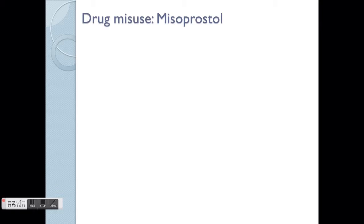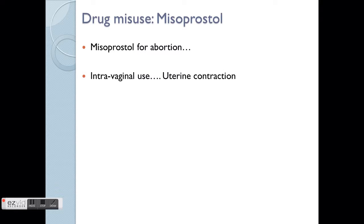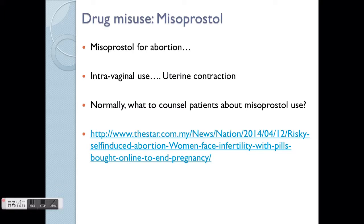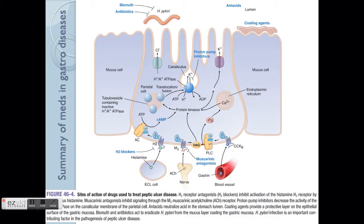Another issue to raise is drug misuse, especially with Misoprostol. Because it's a PGE analogue, it can stimulate the vaginal muscles, and at high doses it can actually cause abortion. Some people misuse it — things intended for oral use are placed vaginally to cause uterine contractions. This was even in local news. If someone is asking for a lot of Misoprostol, do not supply it if something seems suspicious. Always — when serious issues are ongoing — go and see the doctor. Don't self-prescribe; it's too dangerous.